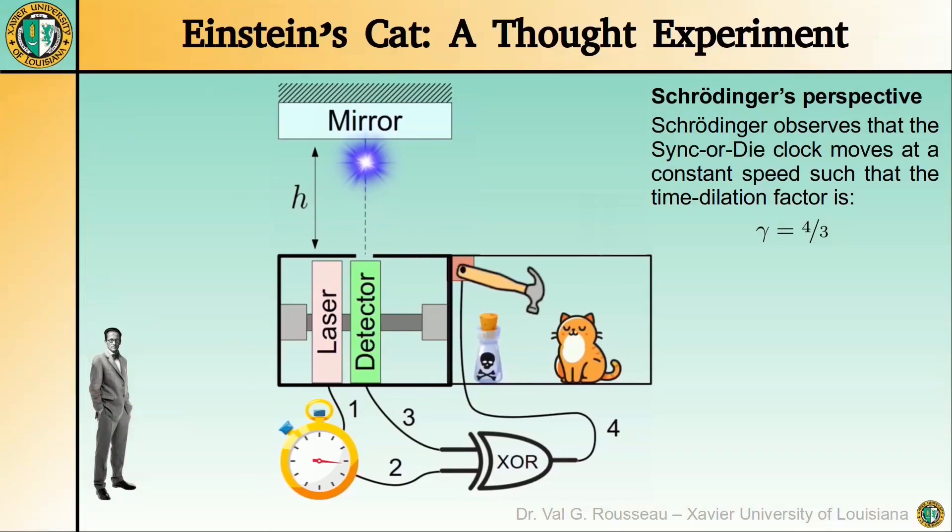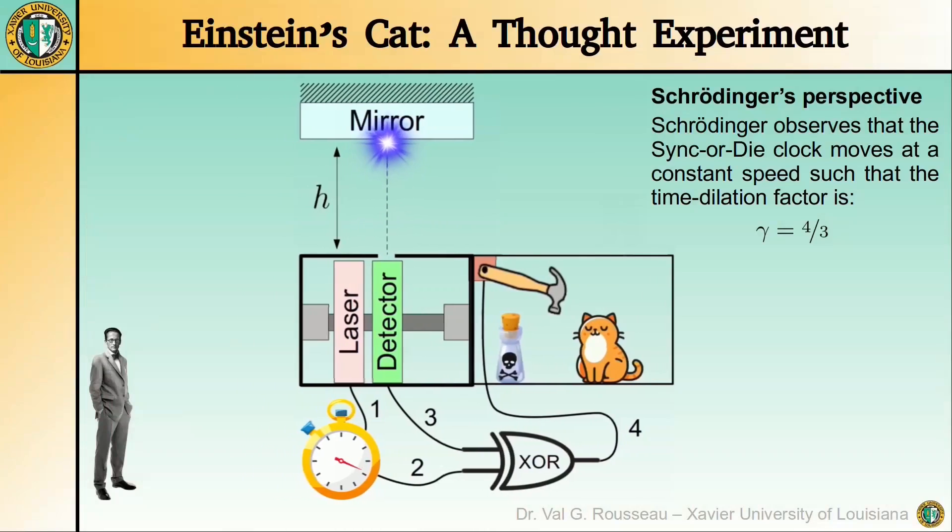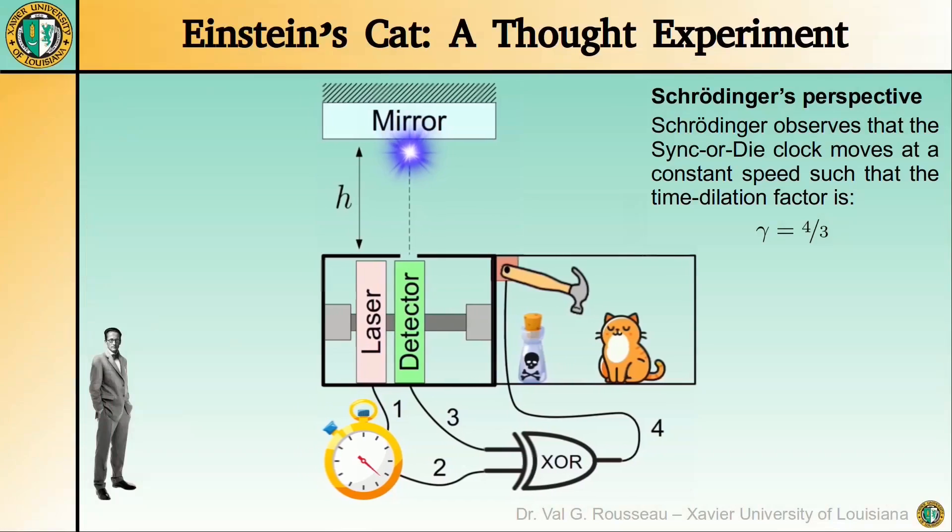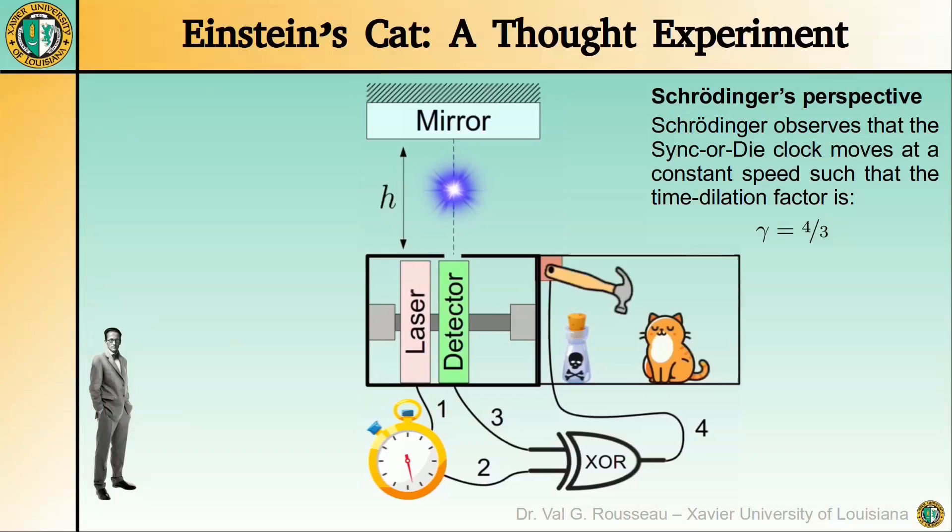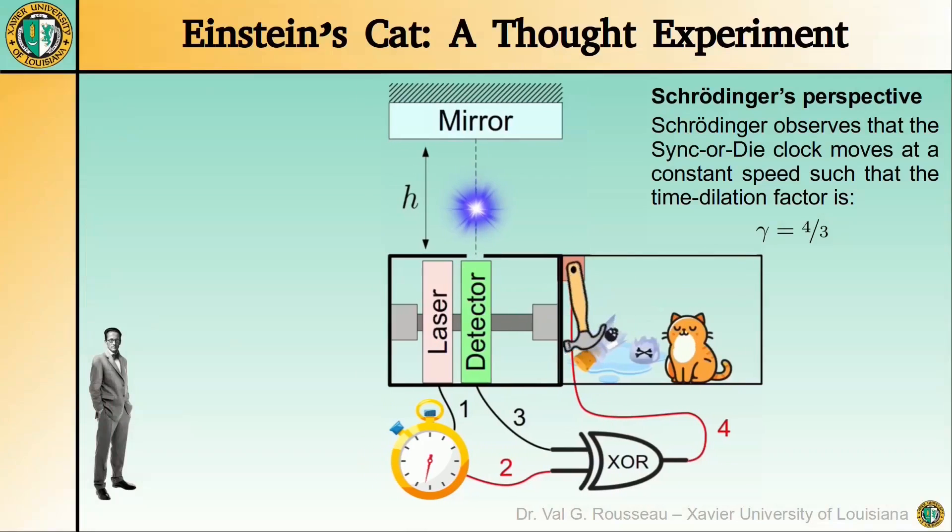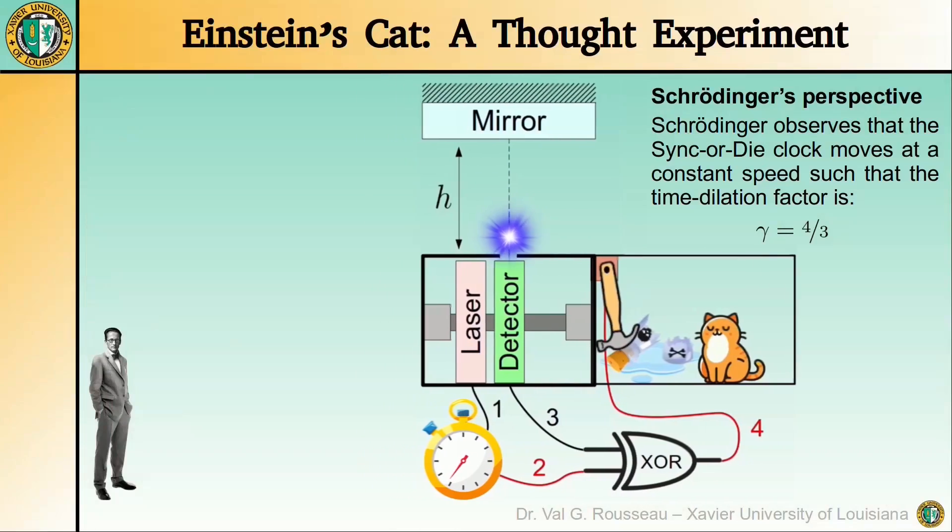Meanwhile, the stopwatch is programmed to send a killing signal at 30 seconds. So from Schrodinger's perspective, the signal is sent before the light pulse returns, meaning the clocks appear out of sync and Tiger dies.